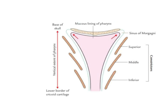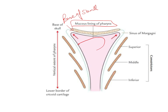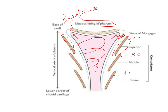If you see here, this is the base of skull, and there will be a mucous lining of the pharynx — this whole area is the mucous lining. Between the muscles, these are the constrictors of the pharynx: this is the superior constrictor, this is the middle constrictor, and this is the inferior constrictor. There will be a space between the base of the skull and the superior pharyngeal constrictor, known as the sinus of Morgagni.